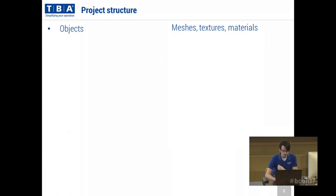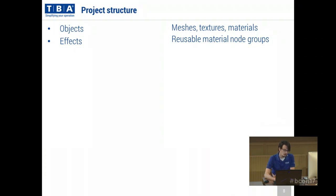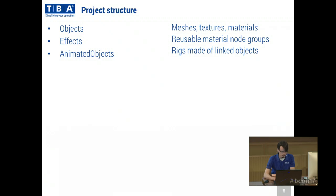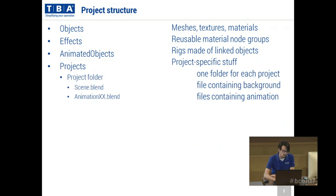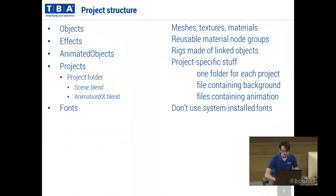In our library folder we have an objects folder with all the meshes, textures, and materials. We have an effects folder with reusable material node groups. We have a folder with animated objects where we store our rigs. We have a projects folder for specific terminals and customers. In a project folder we have the scene — basically the background — and one or more animation files with all the moving parts. We also have a fonts folder. It's very important not to use system fonts because if you open the file on a different computer, the fonts can look wrong.